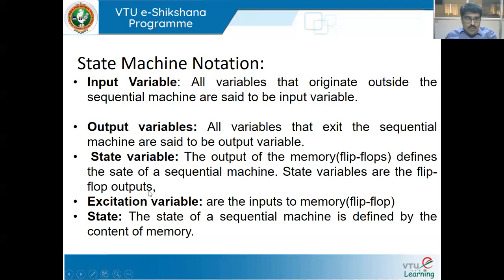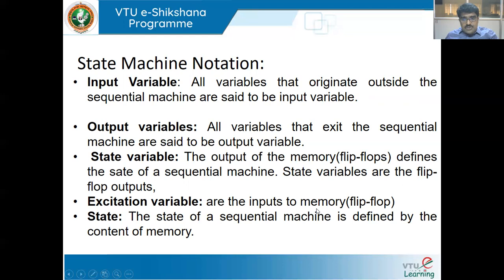If I use two flip-flops, I will have four states: 00, 01, 10, and 11 — that's what we mean by state variables. Excitation variables are the inputs to memory — the flip-flop will change its states depending upon these inputs. The state of a sequential machine is defined by the content of the memory: if I have two flip-flops with content 00, I say it is in the zero state.